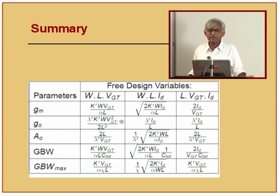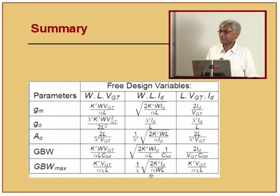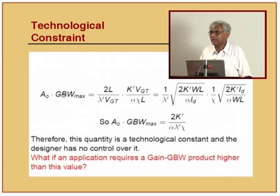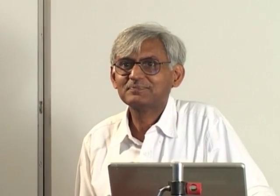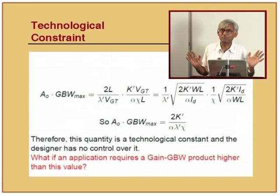We can make a table in terms of W, L, VGT of the quantities GM, G0, A0 (DC gain), gain bandwidth product, and GBW_max. We calculate all of these and put them in a nice table with a particular purpose. If I multiply gain squared with GBW_max, what I get are only technological factors - the designer has no contribution to this quantity. This quantity is invariant: you give me a technology and this is all I can do.